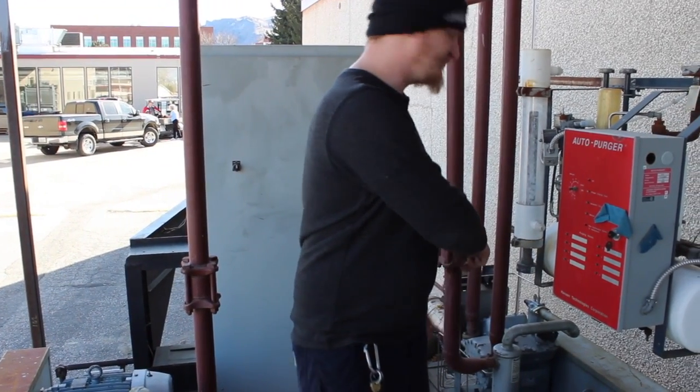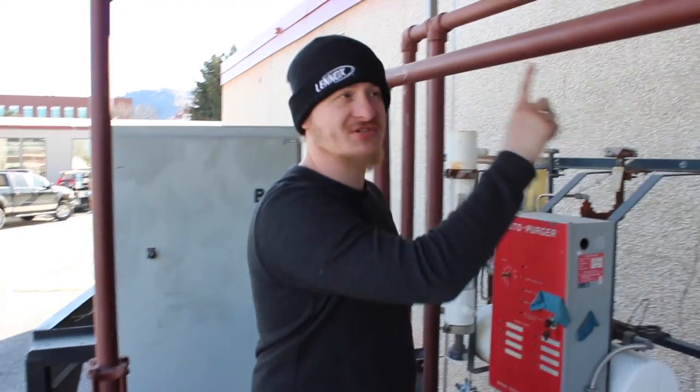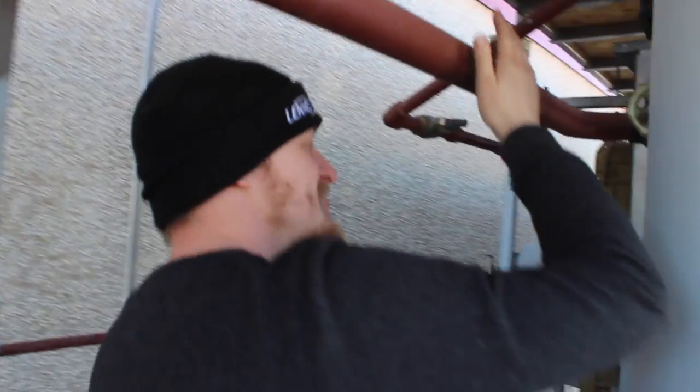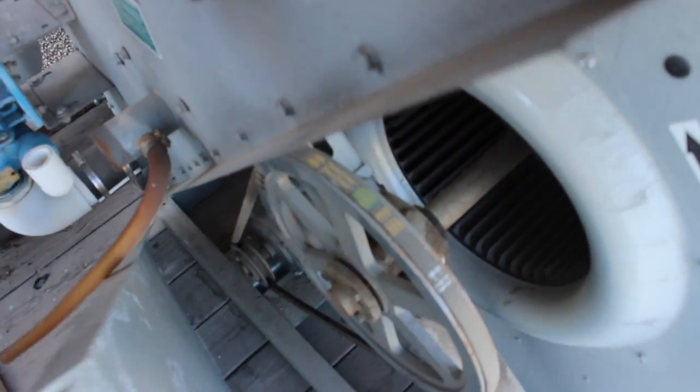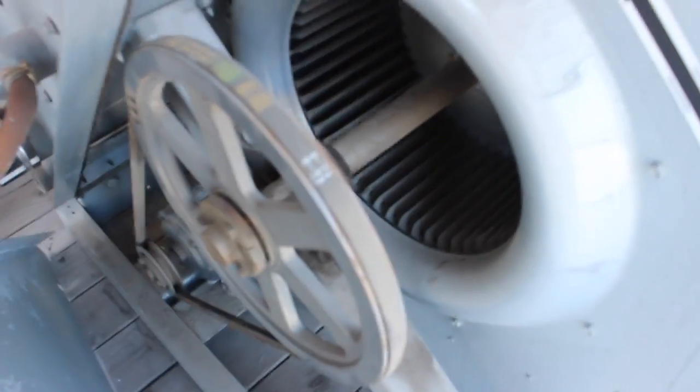From the high stage compressor, we have our discharge line which enters our evaporative condenser. Water flows upon it with two fans. One is missing here, so we have a belt-driven fan with the squirrel cage fan motor down there.